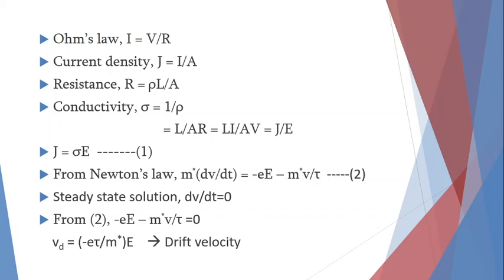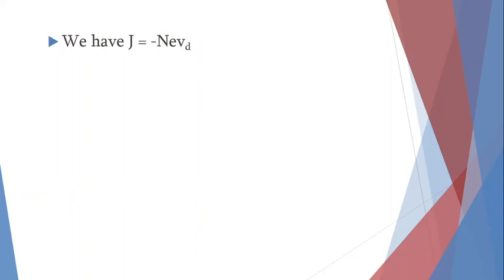An important point: the frictional or viscous force tends to reduce the velocity V to zero, which is consistent with the steady-state solution. Now, let us solve for J, since we have J = σ × E.